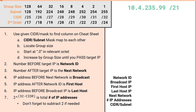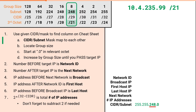Our second example problem will be 10.4.235.99 slash 21. It'll start the same way as before. We'll use the provided CIDR notation to find our respective column in the cheat sheet. Our column provides us a subnet mask value of 248, and since we're in the third octet, this value will appear in the third octet. Then we'll locate our group size, which is 8, and increment in the third octet in sets of 8 starting from .0.